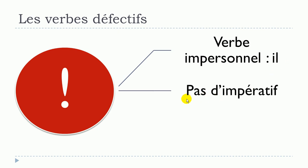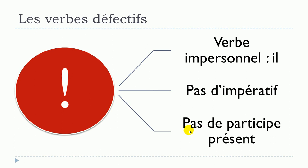Since falloir is un verbe impersonnel, l'impératif doesn't exist because it's not connected to a person. Also, le participe présent — the present participle form — doesn't exist for falloir. So to summarize: verbe impersonnel, only for il third person singular, no impératif, and no participe présent.